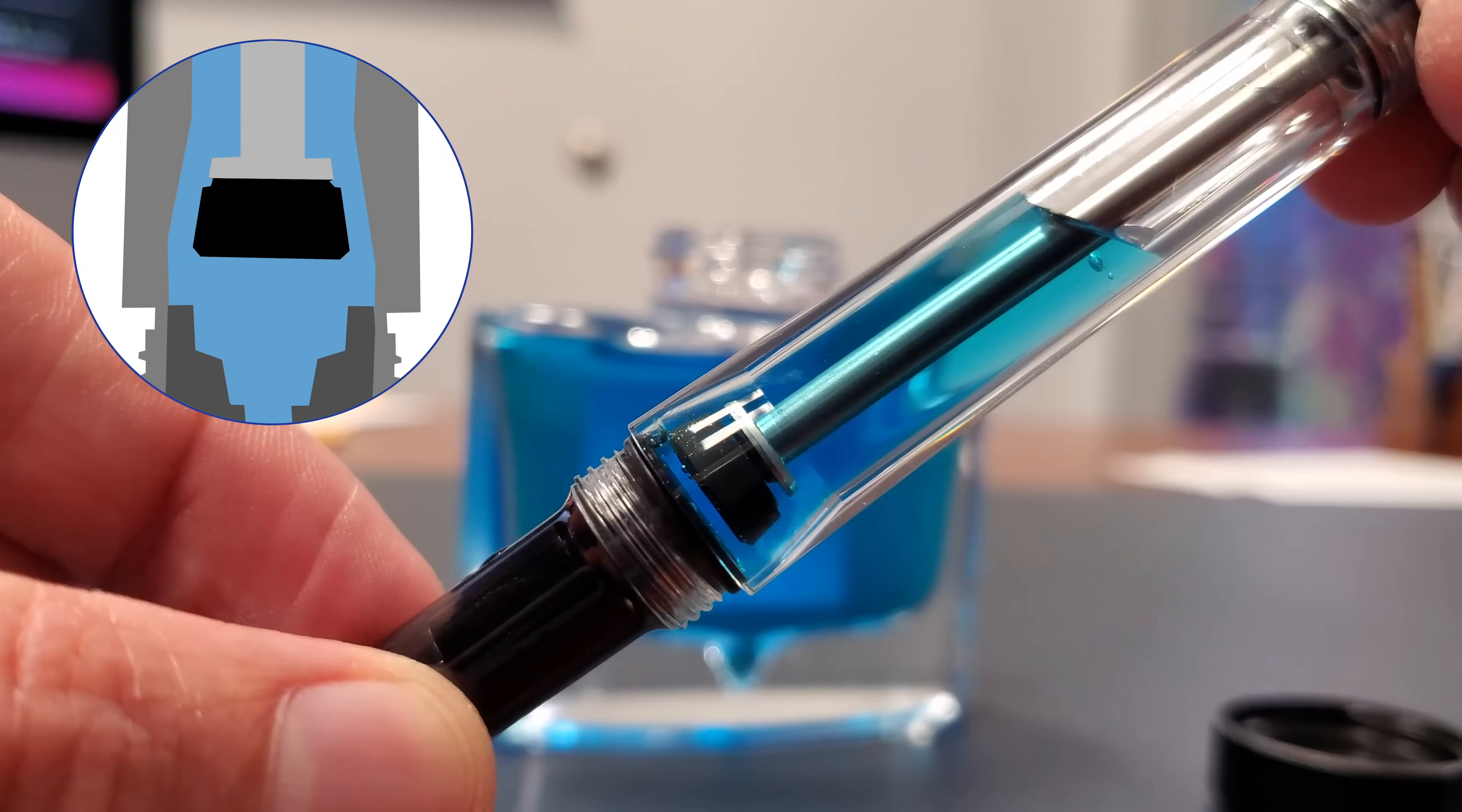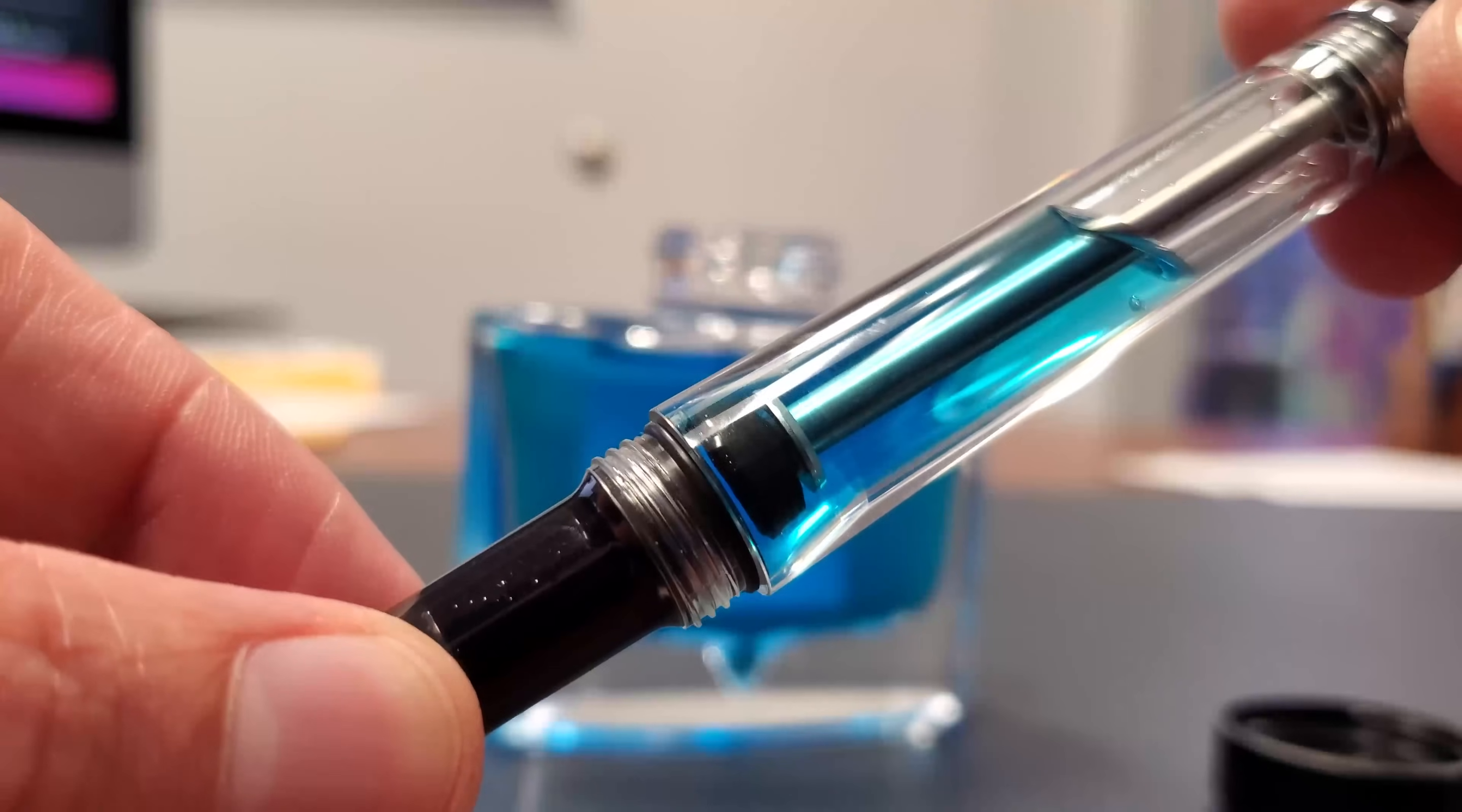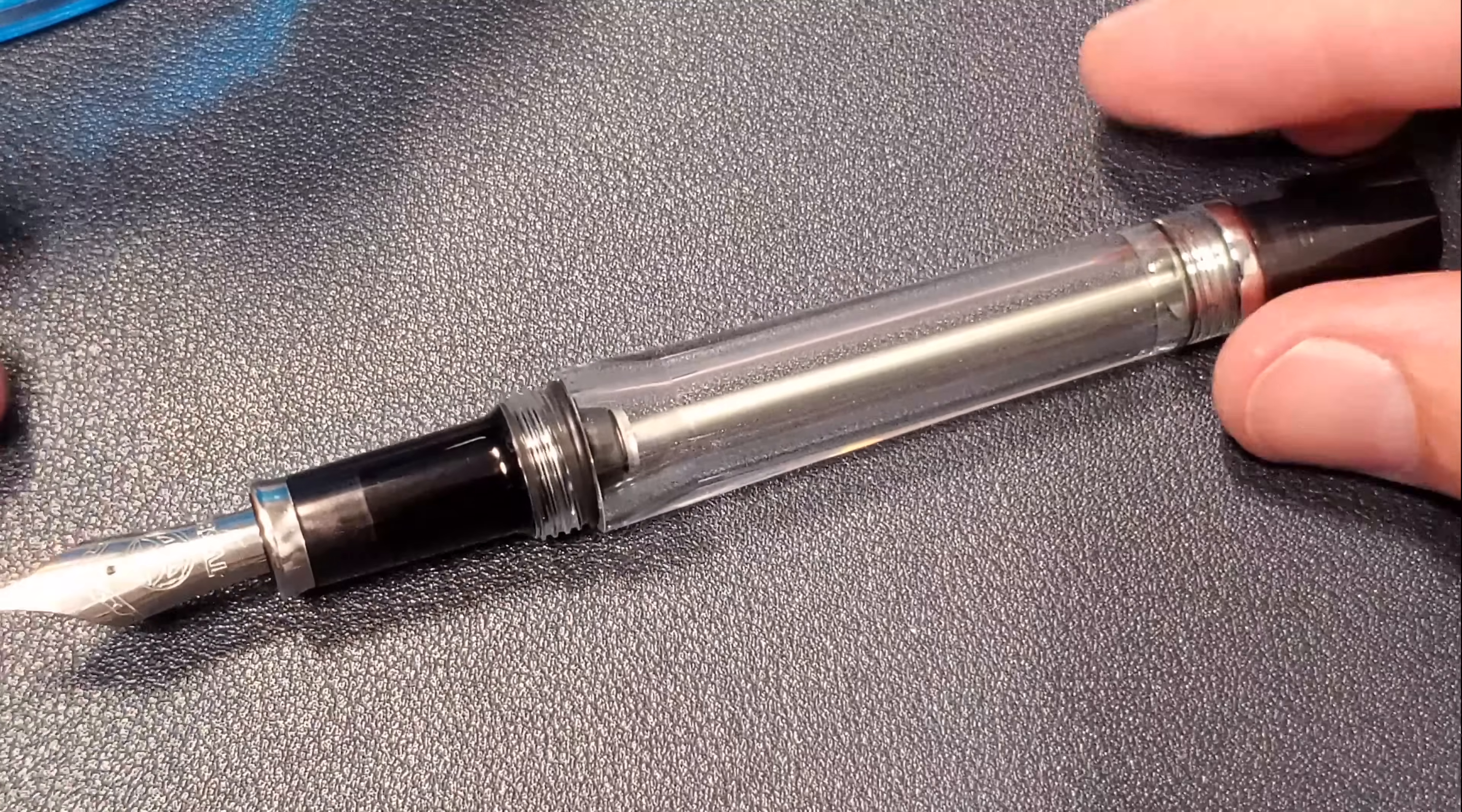So I could keep it unscrewed like this and I could write forever. But or I could once enough ink has moved from the main reservoir to the feed and grip section, I could tighten it back down and be good for another few pages. So why do they do this?